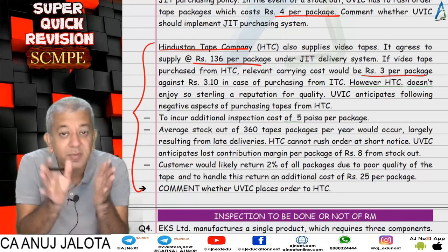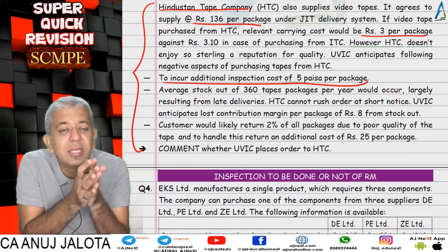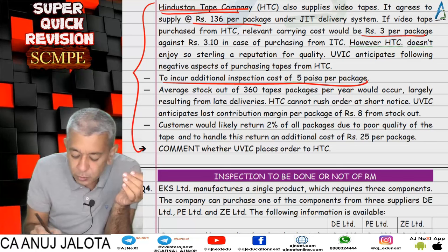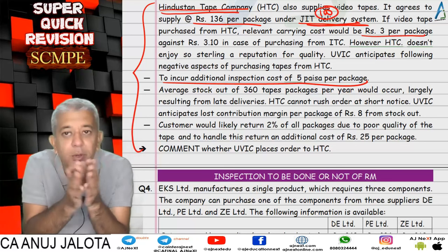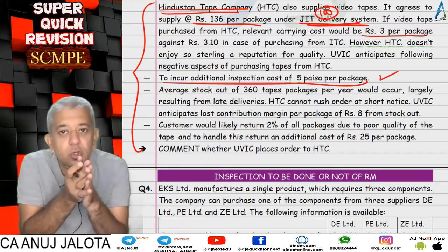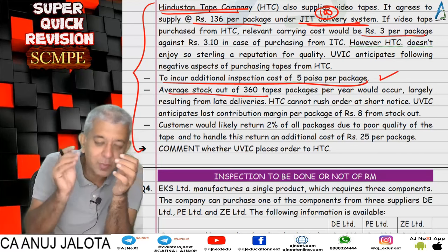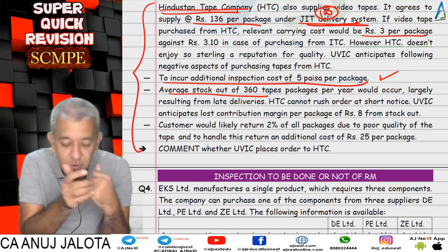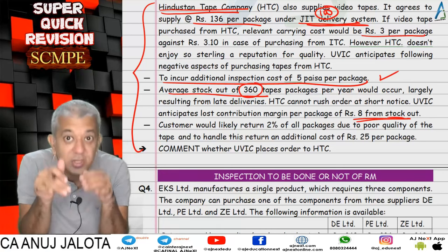Since HTC does not have very good quality, we will incur an inspection cost at the rate of 5 per package. From HTC you are also purchasing under the JIT system — 100 units at a time. So apart from total purchase cost, ordering cost, and carrying cost, there is an inspection cost: 13,000 units at the rate of 5 each. Also there will be a stock-out of 360 units and the customer will go away, so the loss of contribution is 360 × 8 rupees.